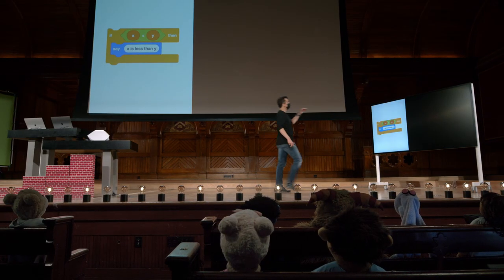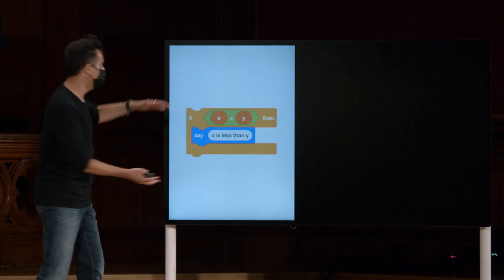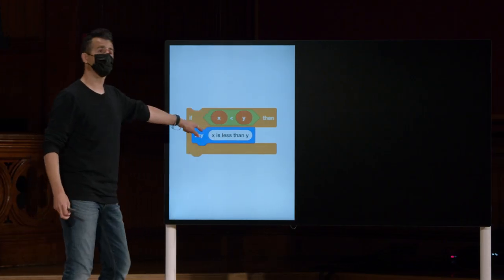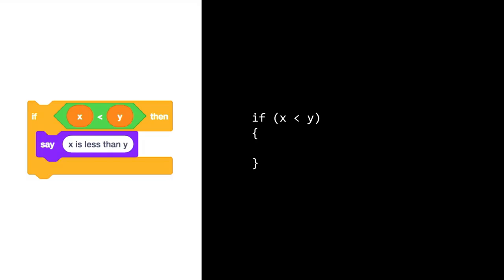Mas vamos olhar para trás em algo no Scratch que parecia um pouco assim, um monte de peças de quebra-cabeça fazendo perguntas por meio desses condicionais. E em seguida, essas expressões booleanas, aqui em verde, talvez dizendo que algo como x é menos que y. Em C, isso realmente mapeia de forma bastante limpa.